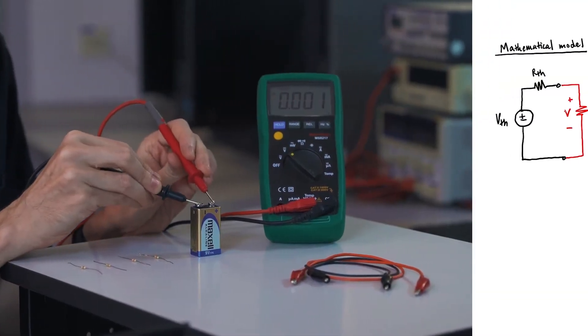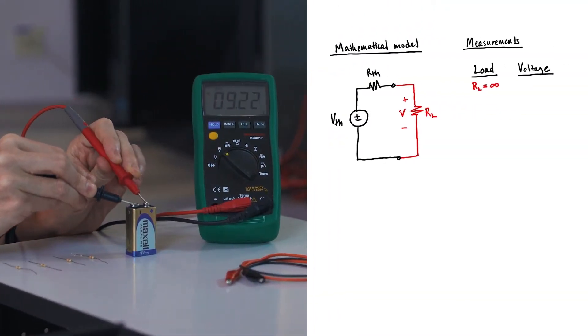First, let's measure the open circuit voltage of the battery. It's a fairly new battery, and I'm measuring 9.22 volts as the open circuit voltage.